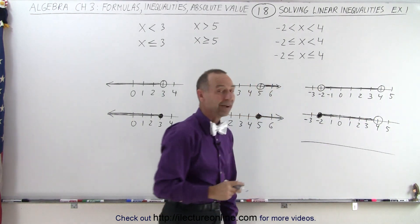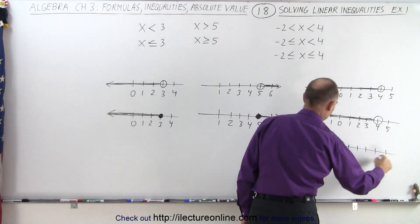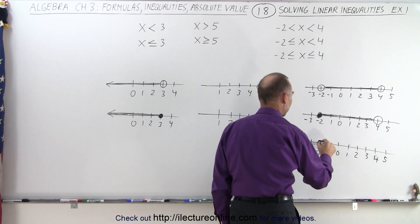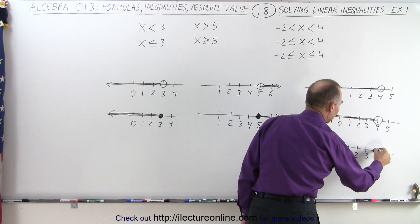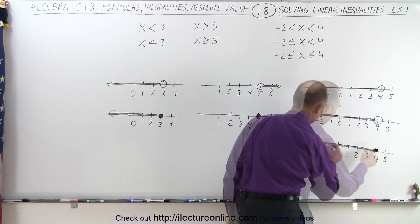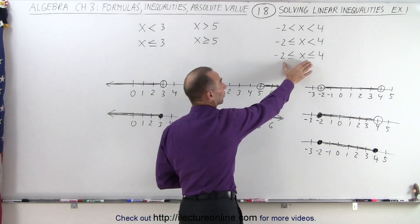Finally, if both endpoints are included, notice we're going to include the endpoint negative 2, so we draw a solid circle. We're going to include the right endpoint 4 and everything in between. That would be the solution for the third inequality here.